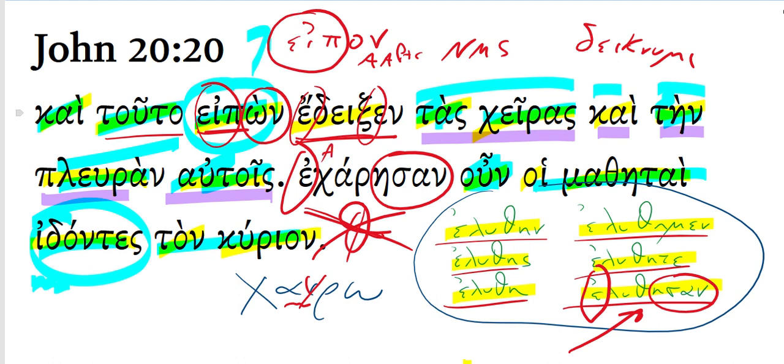So again, we would parse it as an aorist medial passive, because it's a passive form that conveys a middle idea. Medial passive, indicative third person plural. They rejoiced. The subject is given explicitly here. The disciples rejoiced.